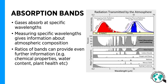So then we have absorption bands. Gases absorb radiation at specific wavelengths. Therefore, by measuring these bands, we can infer information about the target's composition. For instance, if we want to know the composition and what gases are in the atmosphere, we can take these various absorption bands and look at what kind of light is passing through or scattered by the atmosphere, or what's absorbed.